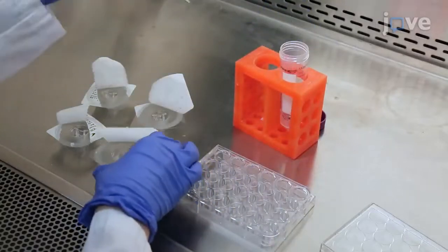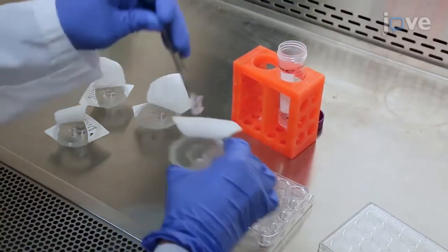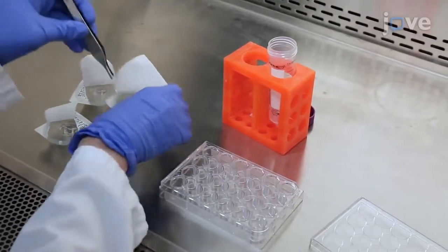To coat the transwell membranes, place the desired number of transwells in a 24-well plate, creating a two-chamber system.